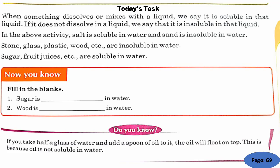If a substance does not dissolve easily in a liquid, does not mix easily, it means it is not soluble — it is insoluble. So in the above activity, salt is soluble in water, whereas sand is insoluble in water.